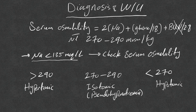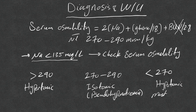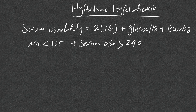The moment I get a sodium value less than 135, the first step is to check serum osmolality — usually included in the blood work. If osmolality is above 290, this is hypertonic hyponatremia. If it is normal, this is isotonic or pseudohyponatremia — stop there, no further testing or treatment needed. If osmolality is less than 270, this is hypotonic hyponatremia, by far the most common in clinical practice.